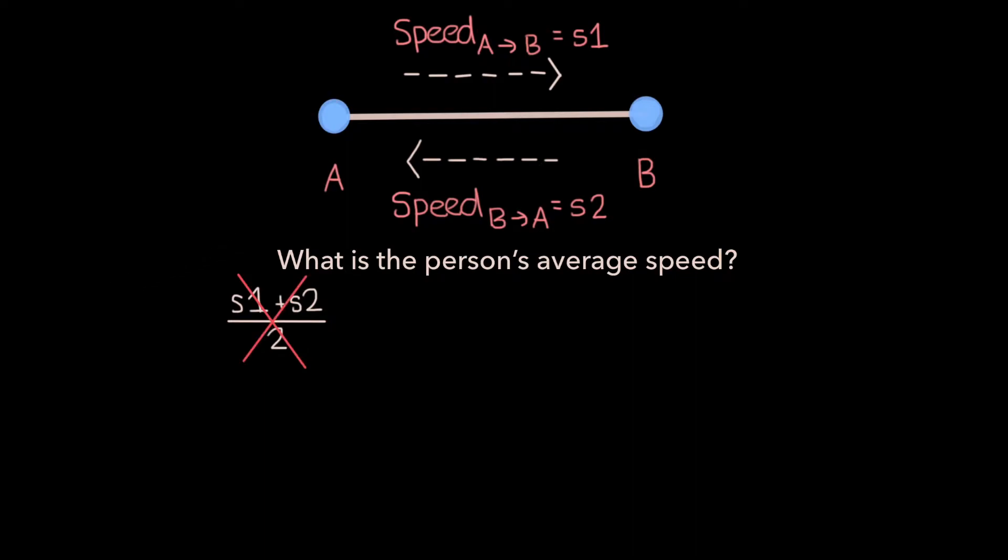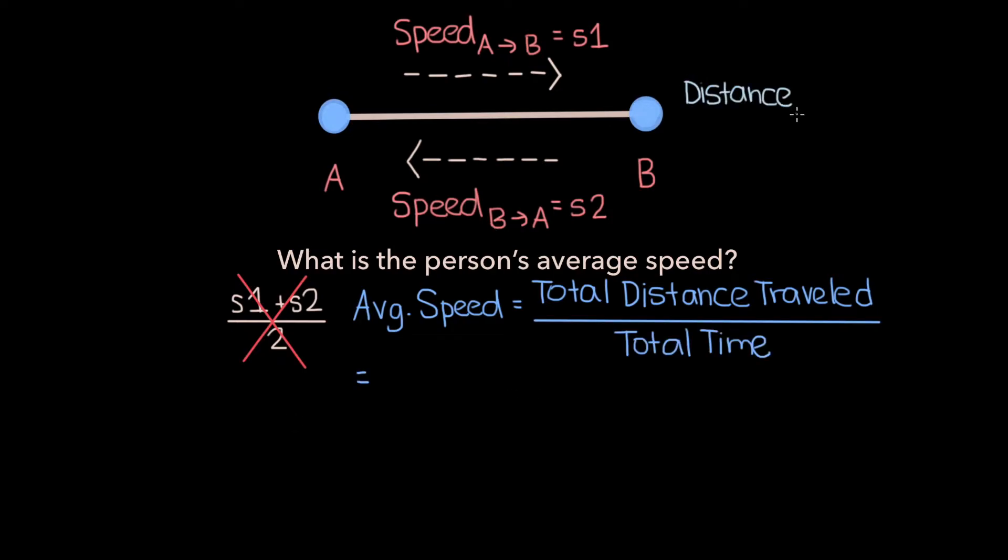We know that the person's average speed is equal to the total distance they travel divided by the total time their journey takes. If we call the distance from A to B D, then the total distance traveled for the round trip must be 2D.